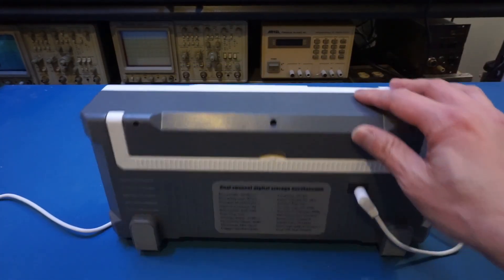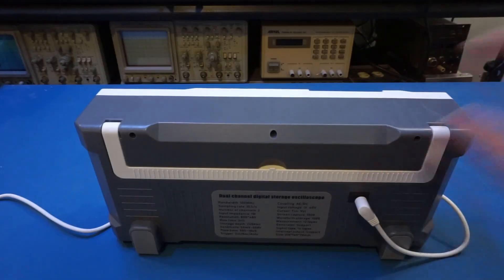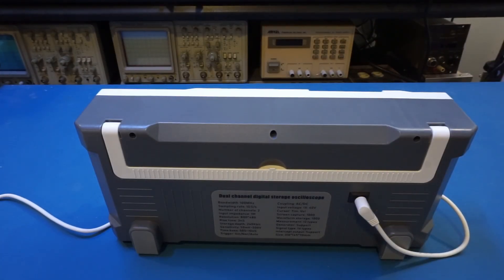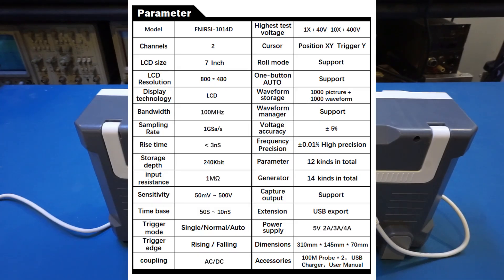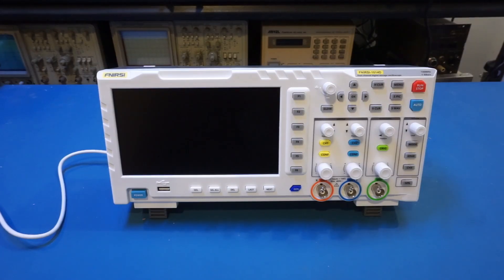Now if you take a look at the back of the unit, you will see some of the specs are actually printed on this label here. By the way, on Finersi's website there is a slightly more detailed spec sheet, but it is still at a pretty high level. Immediately you can see where the corners are cut to achieve this price range. For instance, the storage depth is only at 240k. My 15-year-old Rigol DS1052E had 1 meg storage depth in comparison.